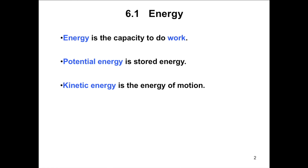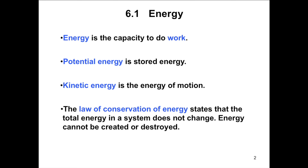A ball at the top of a hill or the water in a reservoir behind a dam are examples of potential energy. When the ball rolls down the hill or the water flows over the dam, the stored potential energy is converted to the kinetic energy of motion. Although energy can be converted from one form to another, the law of conservation of energy governs the process. The law of conservation of energy states that the total energy in a system does not change — energy cannot be created nor destroyed.